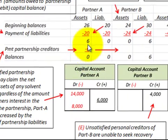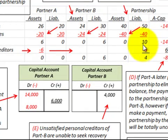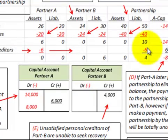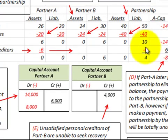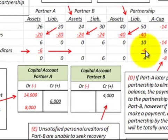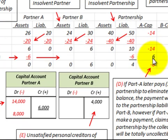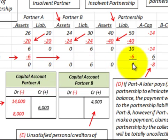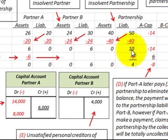Looking at the allocation: for payment to the partnership creditors, Partner A's assets are reduced by $6,000, which is offset against the partnership liabilities. Partnership liabilities were at $10,000; subtracting the $6,000 from Partner A leaves the partnership liabilities at $4,000. Using Partner A's assets to offset the partnership's liability increases Partner A's capital account by $6,000, reducing the negative balance from $14,000 to $8,000.